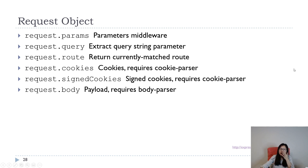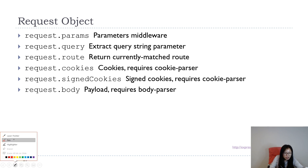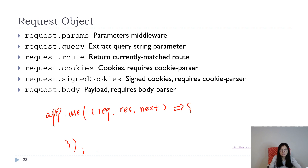So the request object — what is the request object? Suppose in our Express app we have a middleware using app.use. In a middleware we have request, response, and next. The request object I'm talking about here is this request object in the middleware.